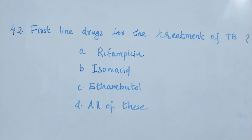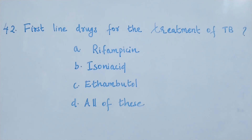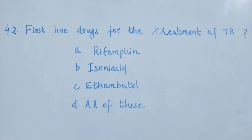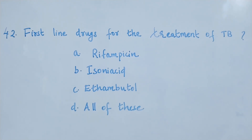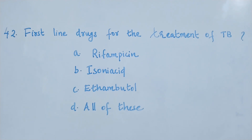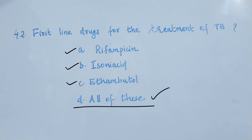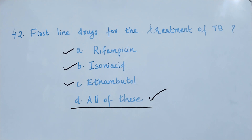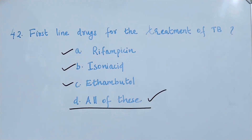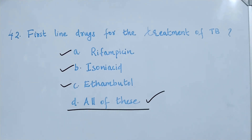Question number 42. First line drugs for the treatment of tuberculosis. Option A: rifampicin. Option B: isoniazid. Option C: ethambutol. Option D: all of these. The right answer is option D, all of these. Rifampicin, isoniazid, and ethambutol are all included in the first line treatment for TB.